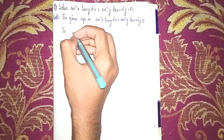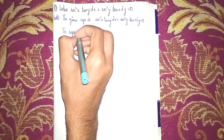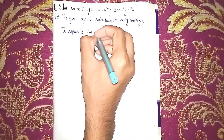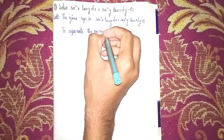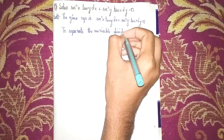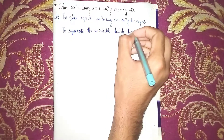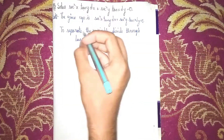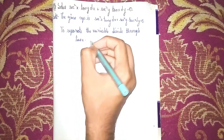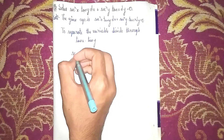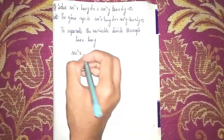To separate the variables, we divide through by tan x times tan y. We are dividing by tan x into tan y because both tan x and tan y appear in the equation. The first term becomes secant squared x times tan y divided by tan x times tan y.